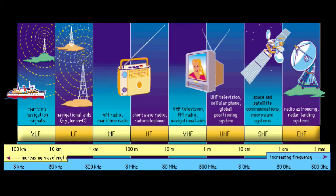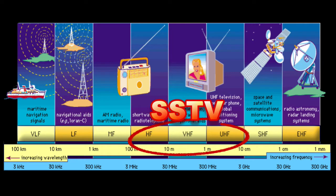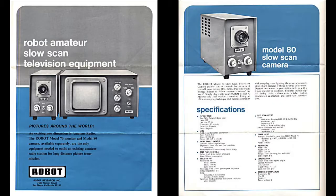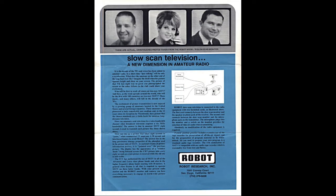NASA communicated with the astronauts on 2200 MHz microwave frequencies, adjacent to the current 13-centimeter ham band. SSTV has been legalized for ham operators since 1968, but required expensive dedicated hardware that was connected to the transceiver.